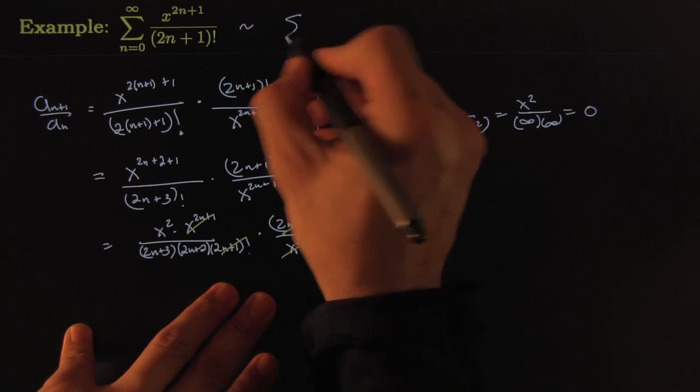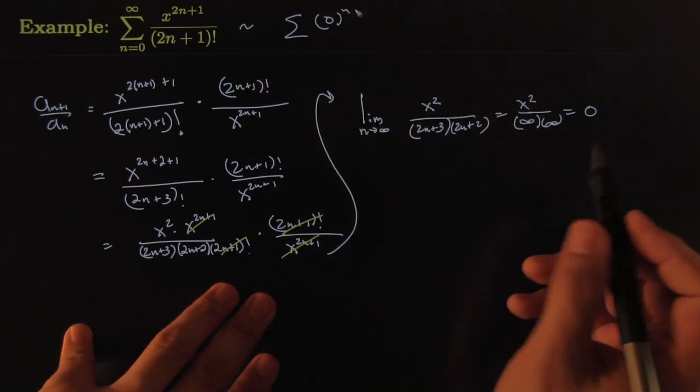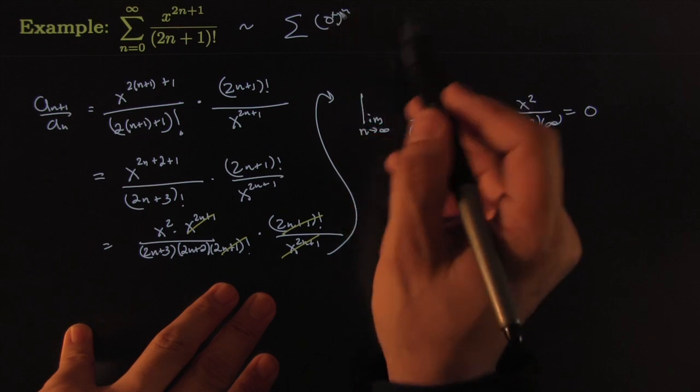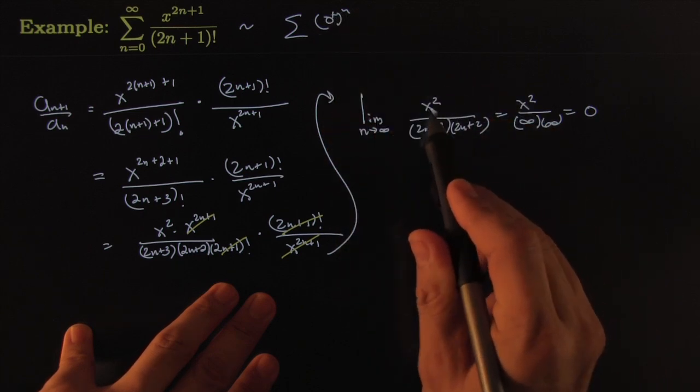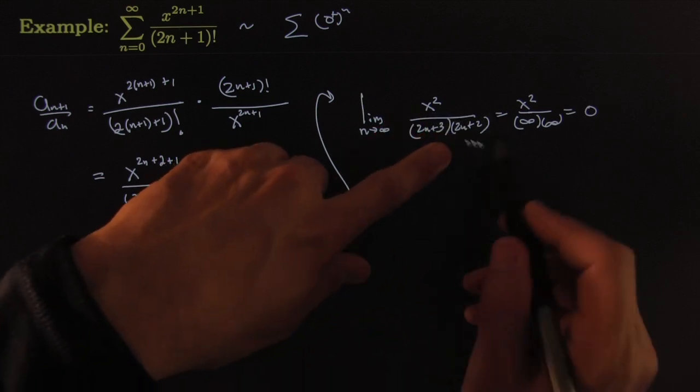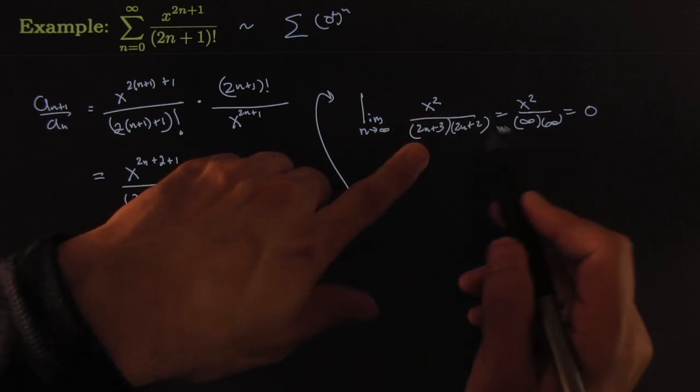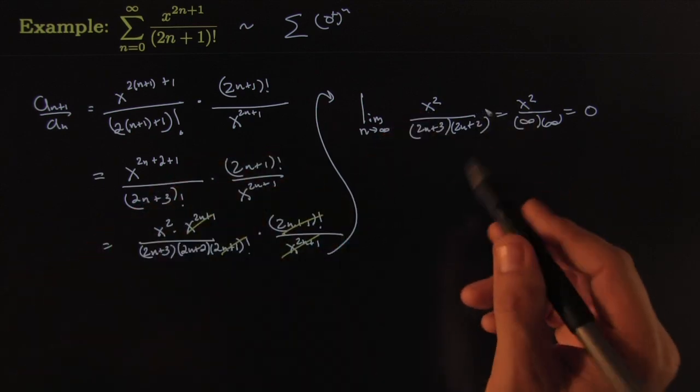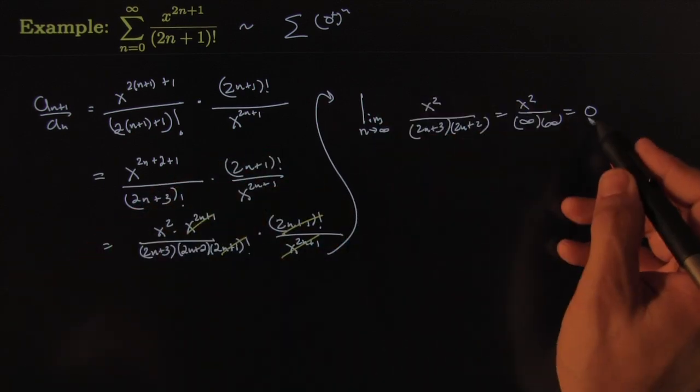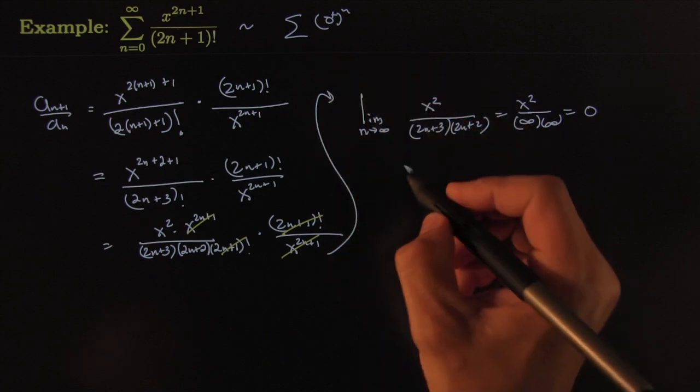And so we get that the original series behaves a lot like summation of a power series where the ratio is 0 or pretty close to 0. For which x does this happen? Does it happen for x equals a thousand? Yes. Does it happen for x equals a million? Yes. That happens for any real number x, and so that will converge.